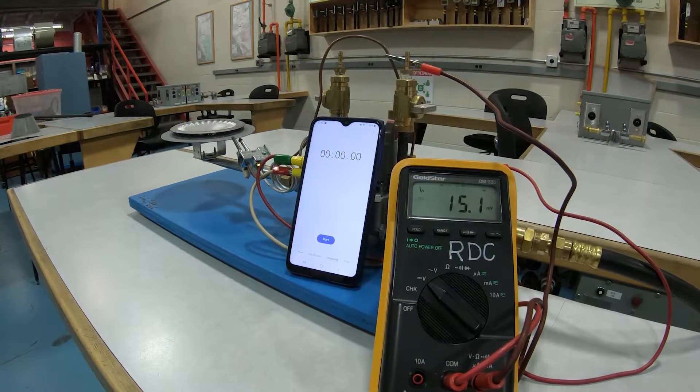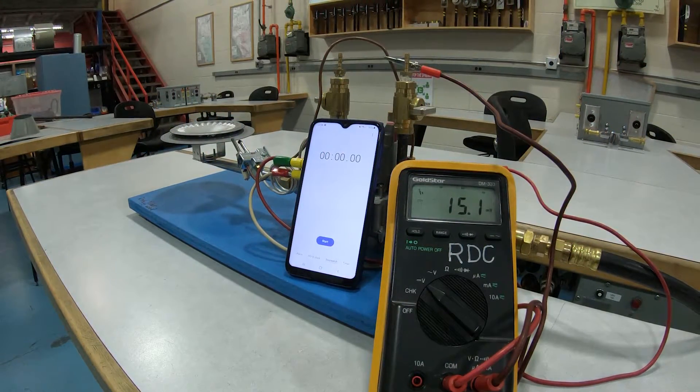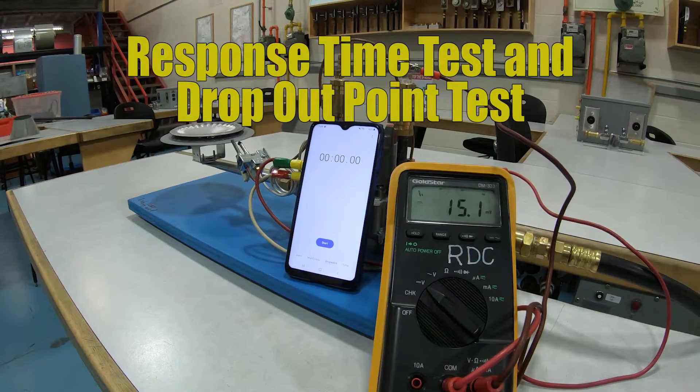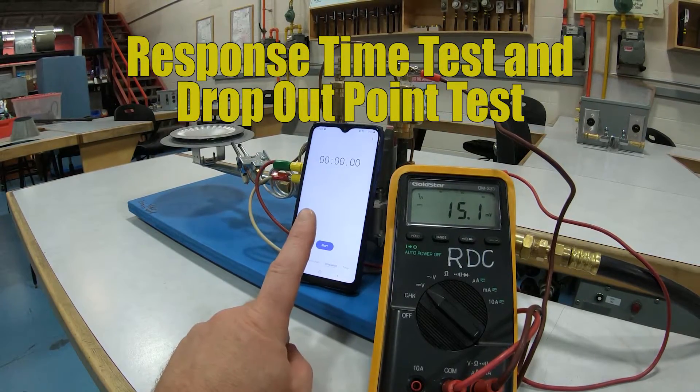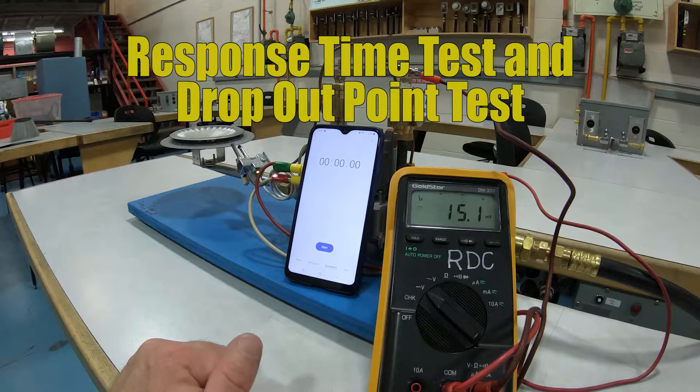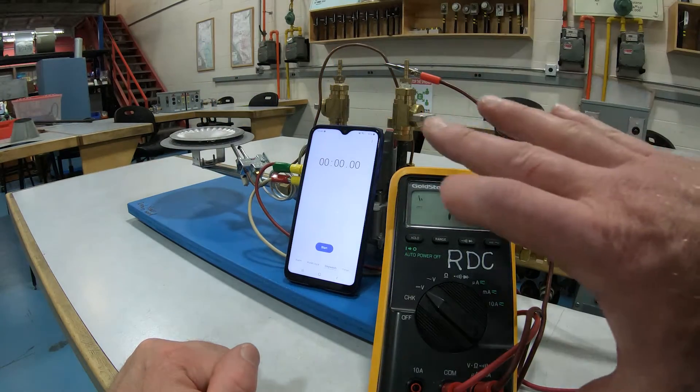Now we're going to conduct two tests simultaneously. We are going to do this response time test, that's why we have a stopwatch right here, and we're going to do our dropout point test, which is why we're doing the closed circuit test back here.